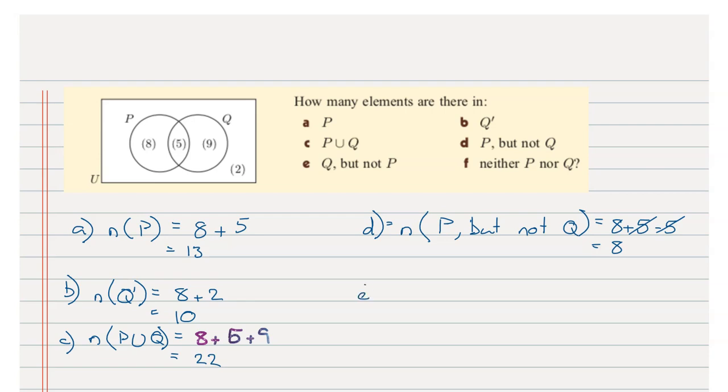Going down again we have e, so it is the opposite. It is Q but not P. Well what does that equal? All of the elements in Q but excluding the ones that are also in P. So it is 9 plus 5 take away the 5. Cancelling out the fives we are simply left with 9 elements.